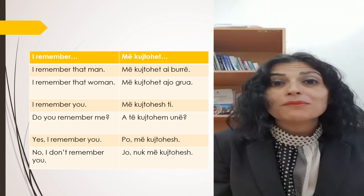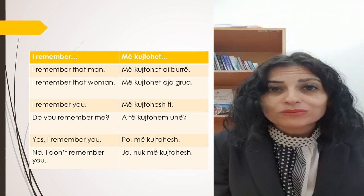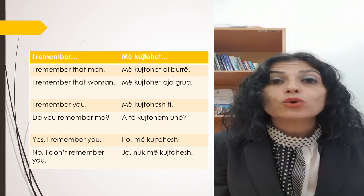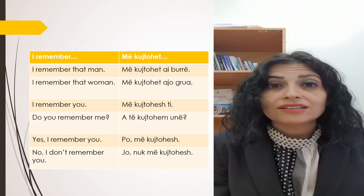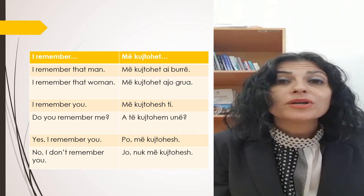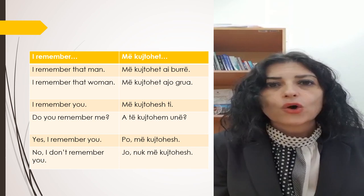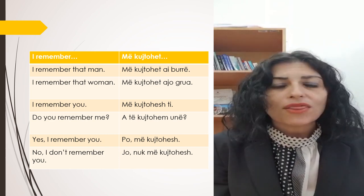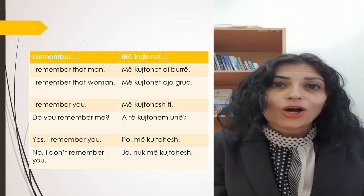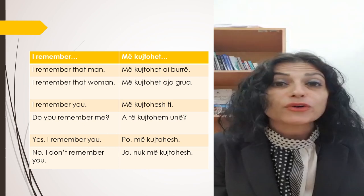Or, if you are meeting someone and you say 'I remember you', in Albanian language you are going to say: 'më kujtohet ti'. As you know, in Albanian language the verb form will change when you are talking to someone in front of you. So 'më kujtohet ti' means I remember you.